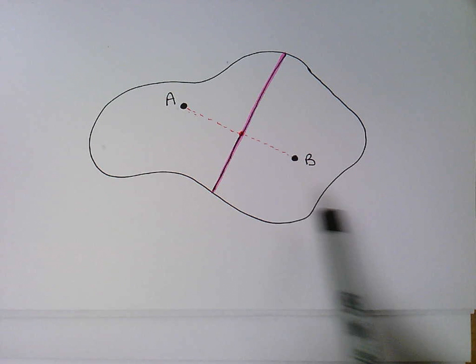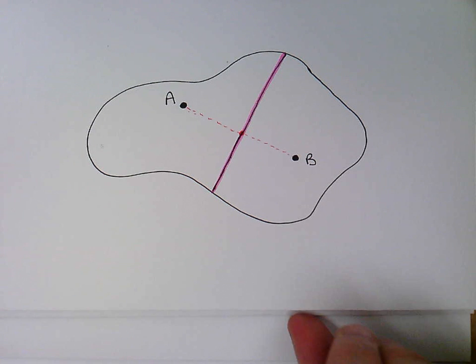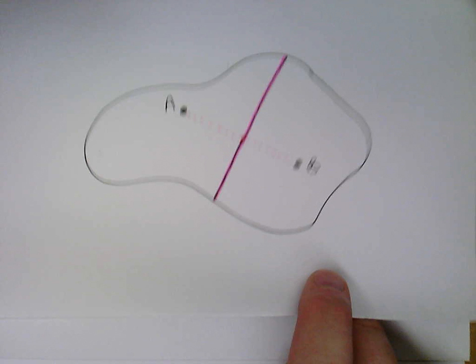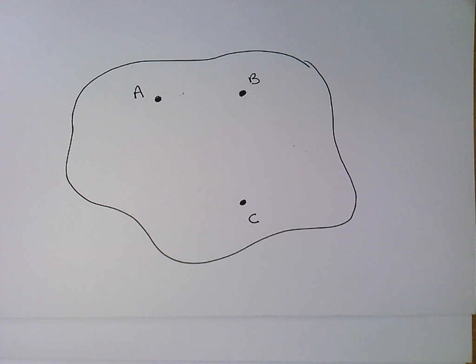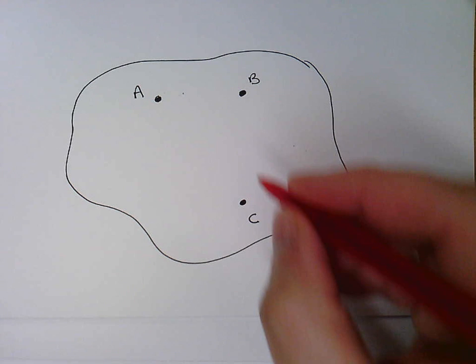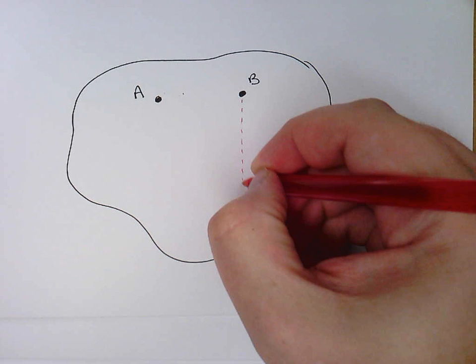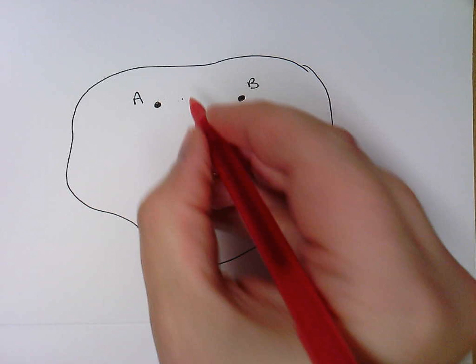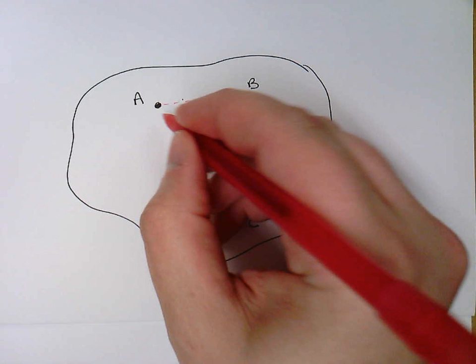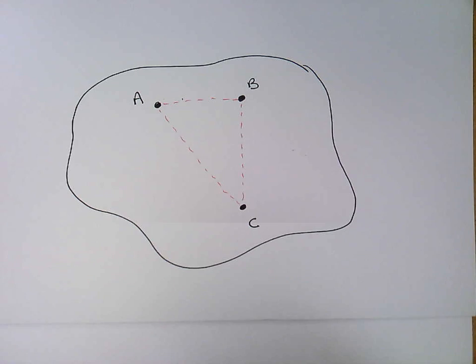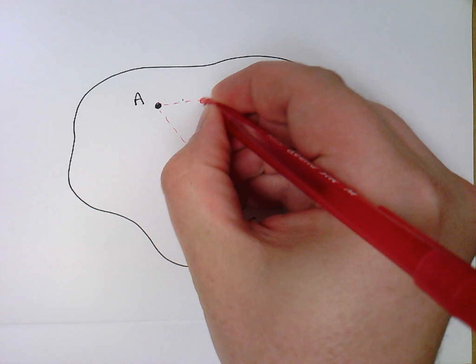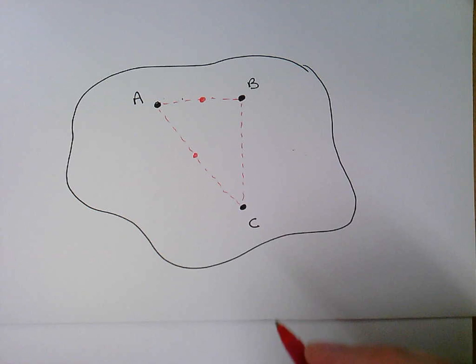Now of course they can't all be this easy or we'd have nothing else to do in this class. So let's try just a slightly more difficult one. Let's do one that has three data points or three sampling stations. So I'm just going to draw a quick dotted line connecting each of these three to each of the others. And same thing, I'm going to do a perpendicular bisector for each of these three points. And again, I'm pretty much just going to eyeball it.